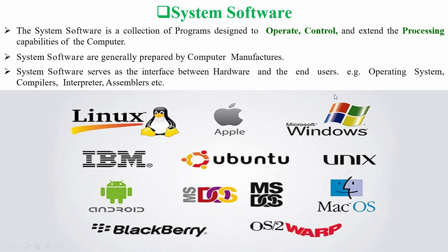Examples of system software are operating systems, compilers, interpreters, and assemblers. An operating system is the entire program that runs the computer. Without an operating system, a computer cannot work.